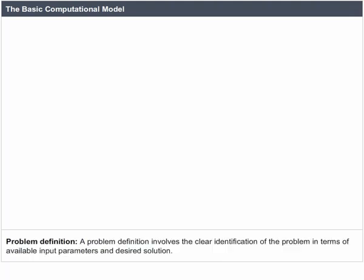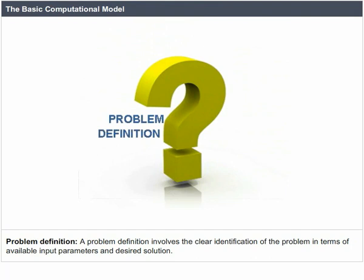The Basic Computational Model Introduction: Problem Definition. A problem definition involves the clear identification of the problem in terms of available input parameters and desired solution.